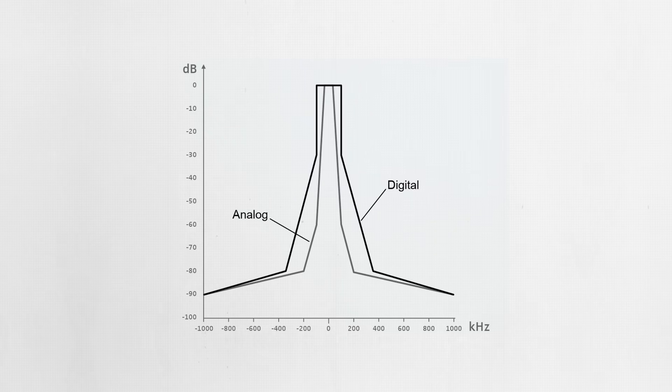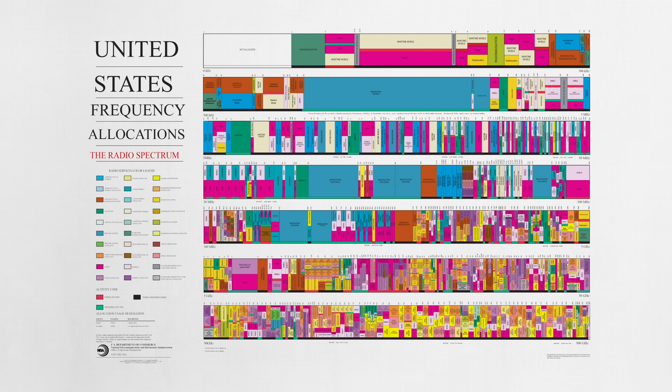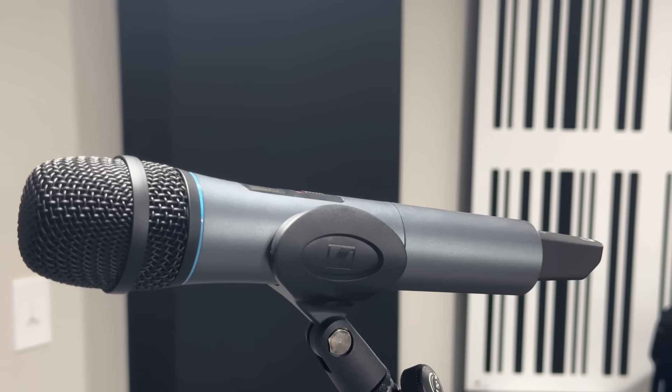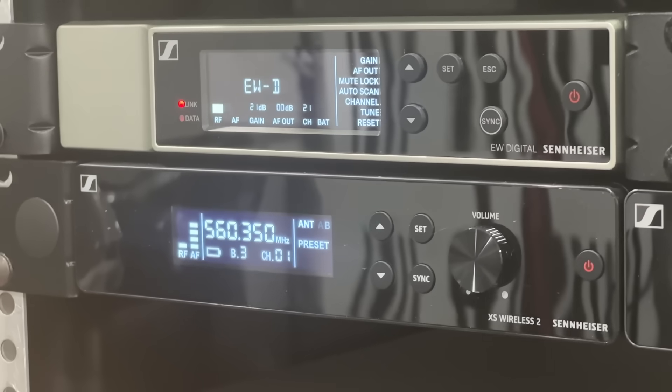Generally speaking, UHF — ultra-high frequency — digital systems tend to facilitate more channels in the same bandwidth compared to analog systems. This has to do with the way signals intermodulate with nearby channels. In an analog system, you need to take much more care which frequencies are used, because even if transmitters use different carrier frequencies, those carriers could interfere with one another. The binary nature of digital signals makes this much less of a problem. Digital systems can allow for many more channels within the same bandwidth compared to analog, and that's a big deal as the wireless frequency spectrum becomes more limited over time with legislation in different regions.